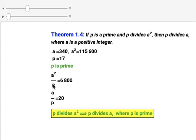Now a squared divided by p equals 6,800, and a divided by p equals 20. There is no remainder.